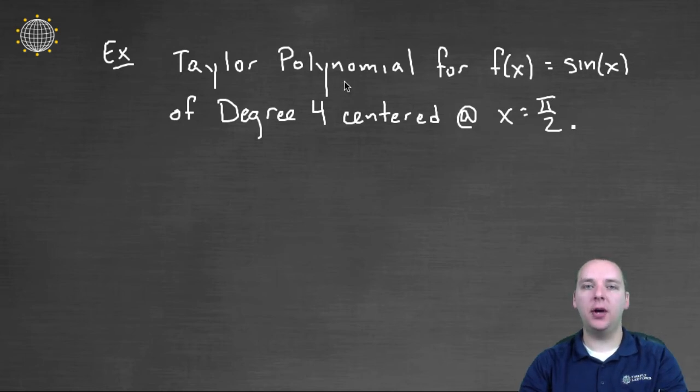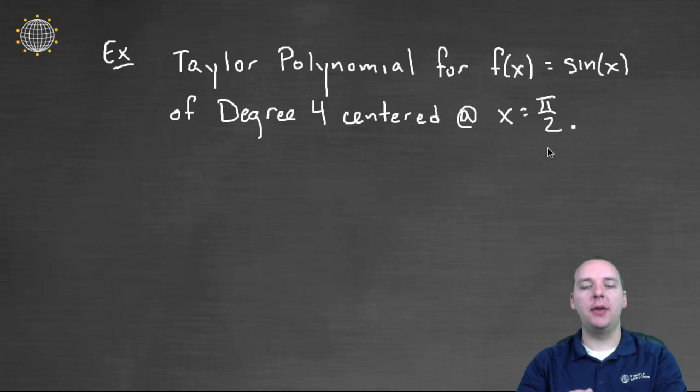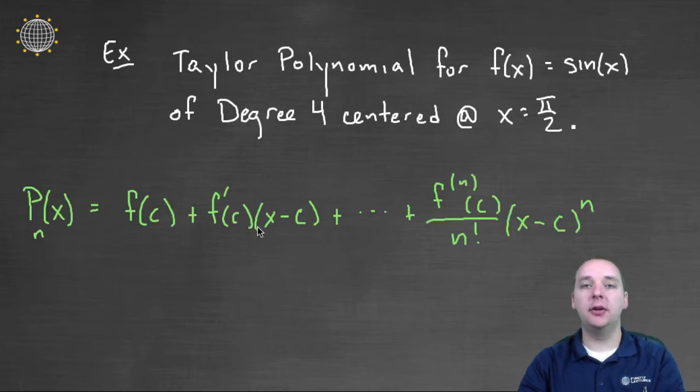In this example, we're going to find the Taylor polynomial for the sine function of degree four that is centered at pi over two. This is going to be a degree four polynomial that bends and turns like a trig function that will approximate the sine curve, and the approximations will be best around pi over two.